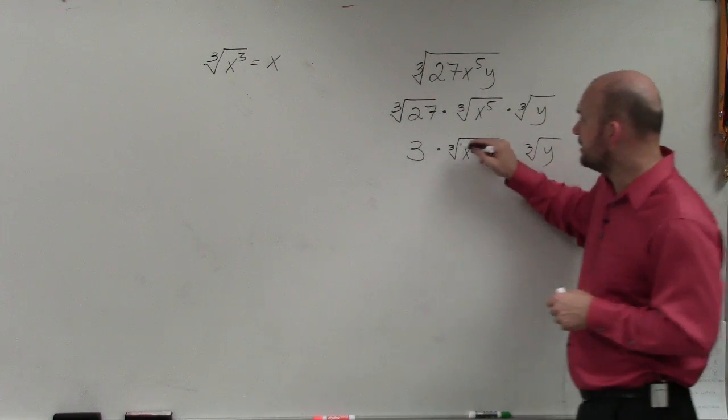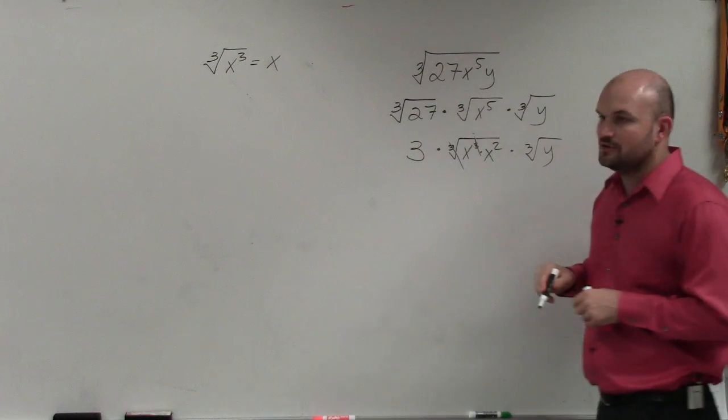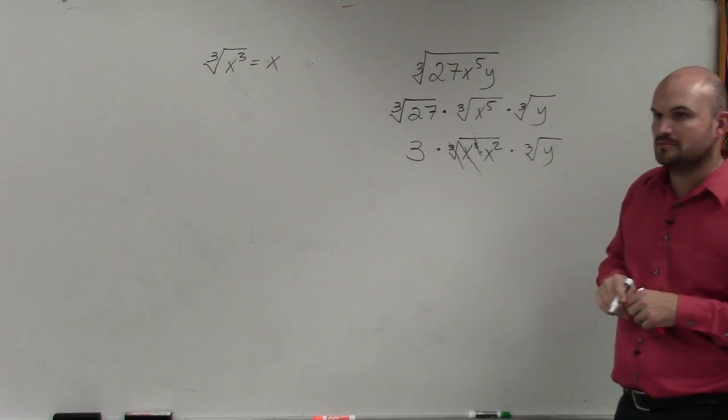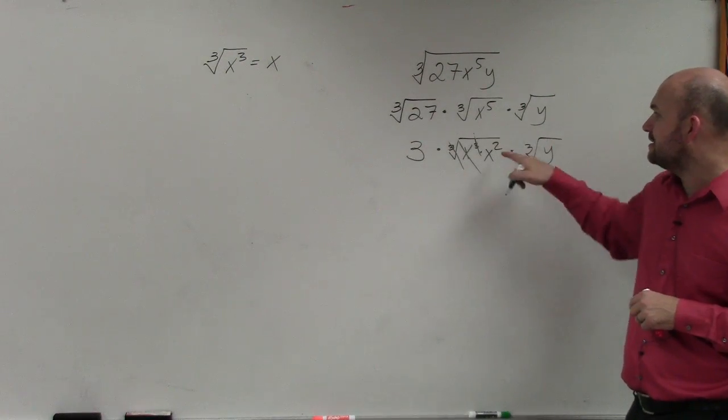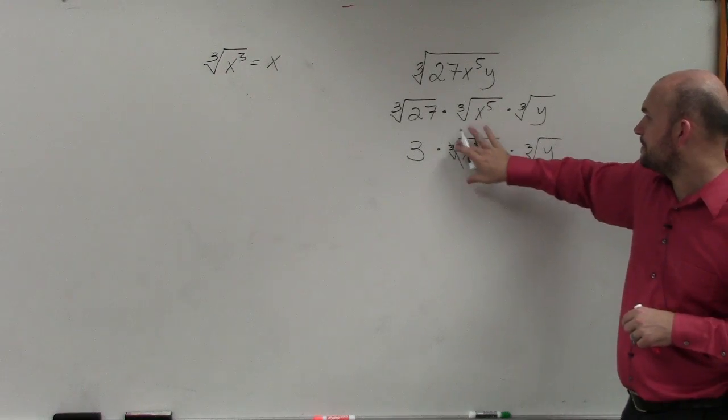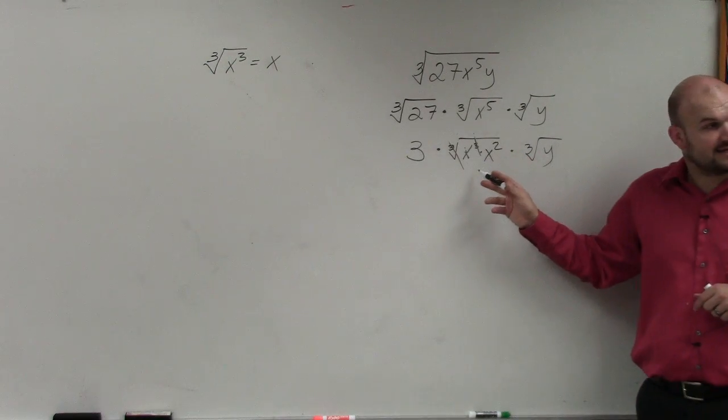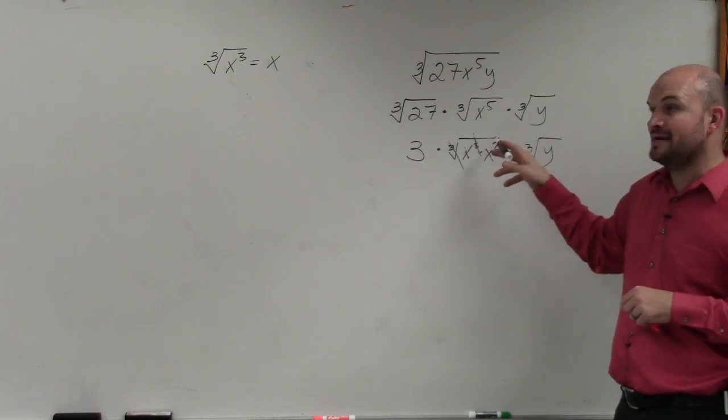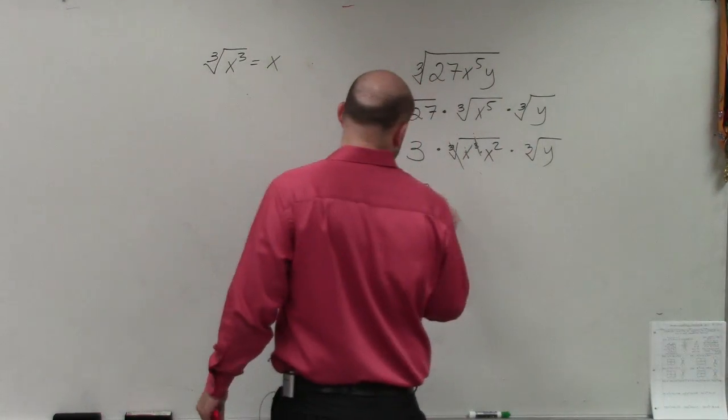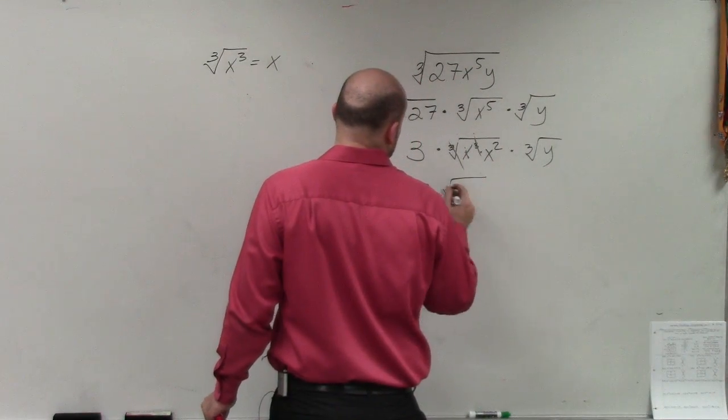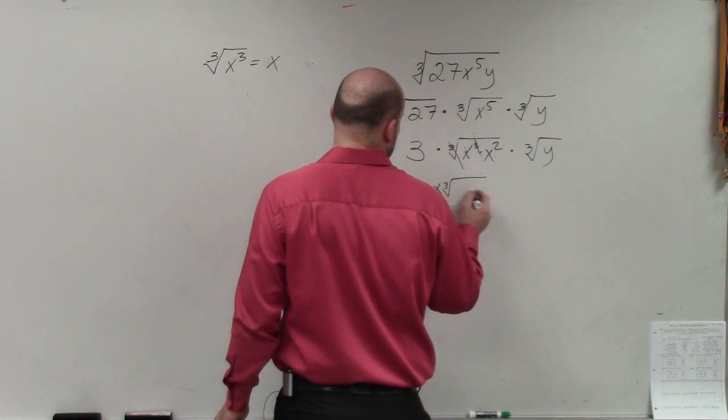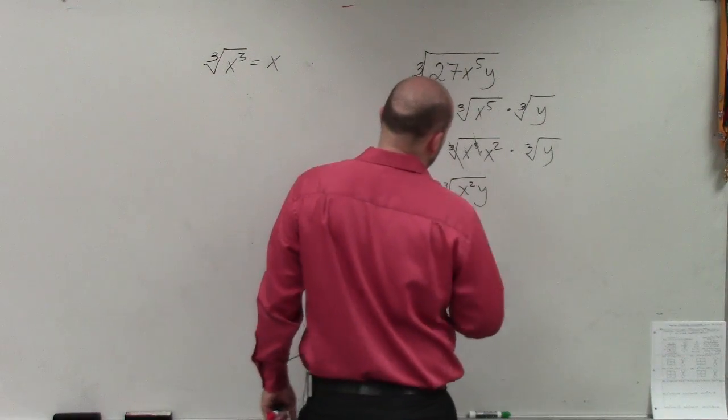Well, the cube root of x cubed is going to simplify just to x. And then I cannot take the cube root of x squared, so that's going to remain under the radical. So my final answer is 3x times the cube root of x squared y.